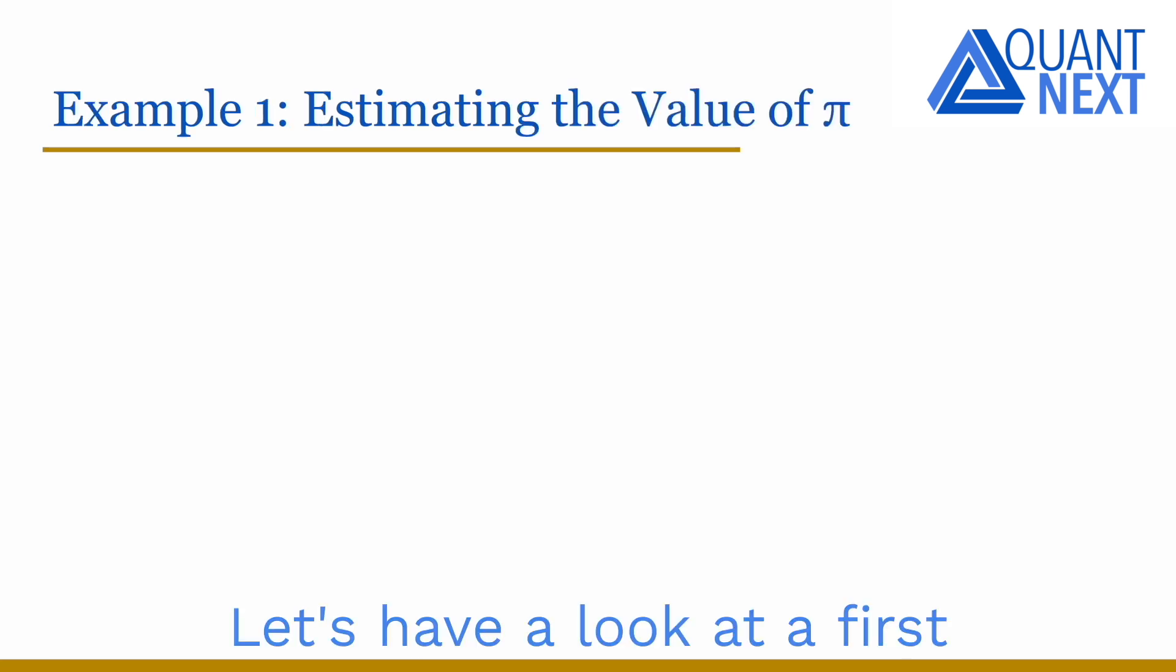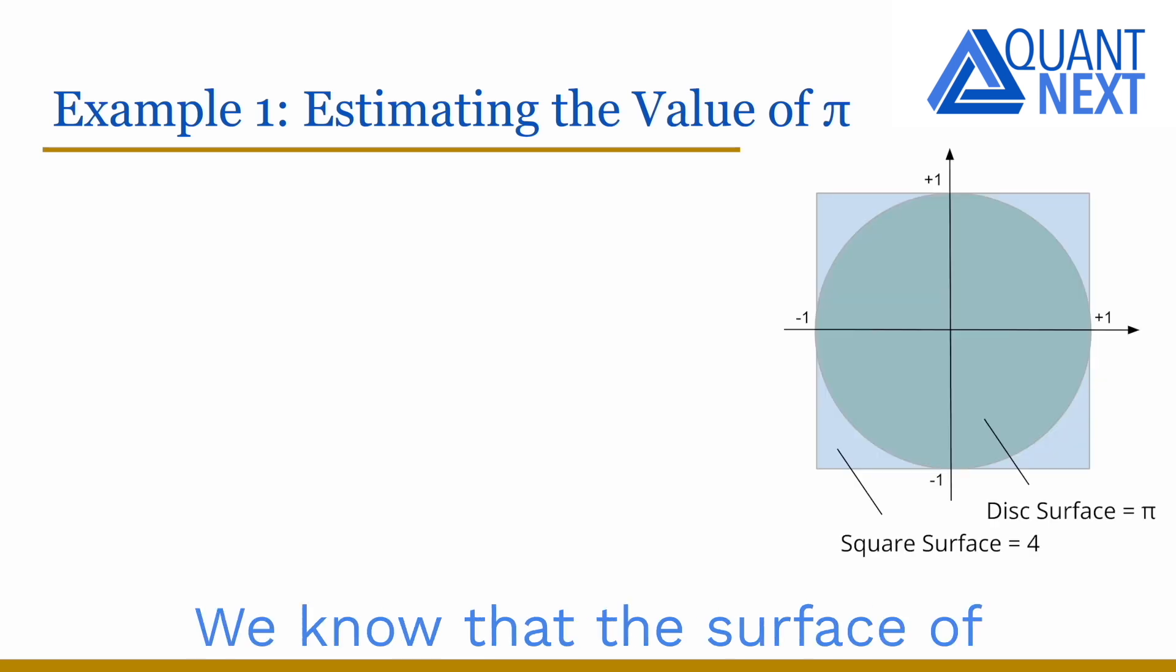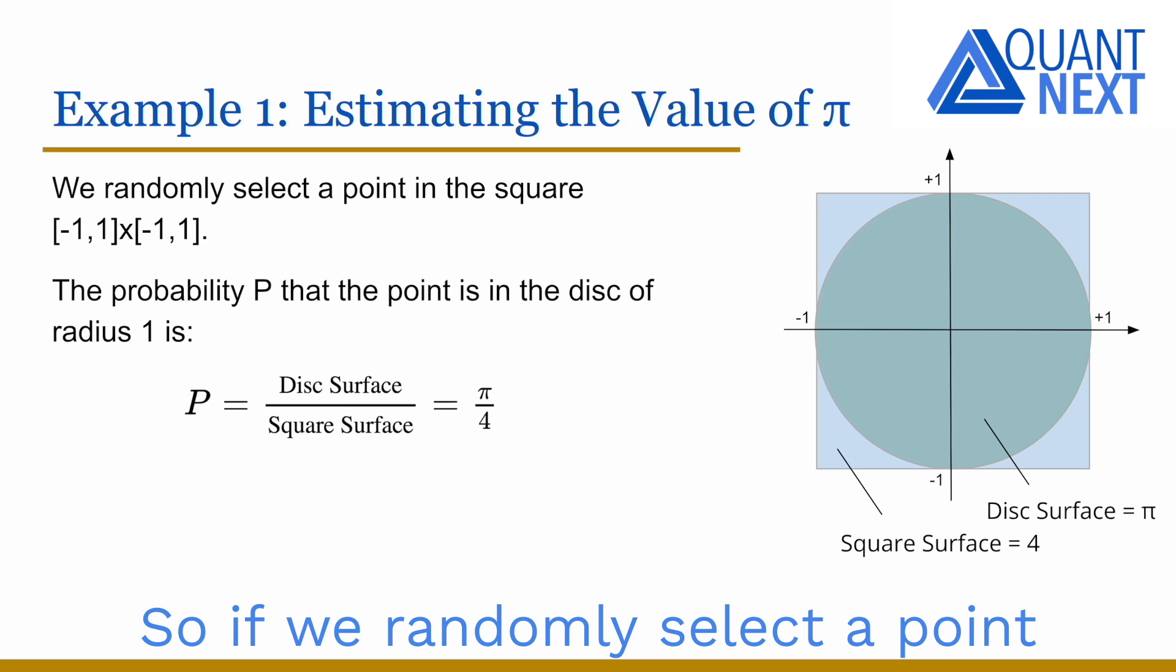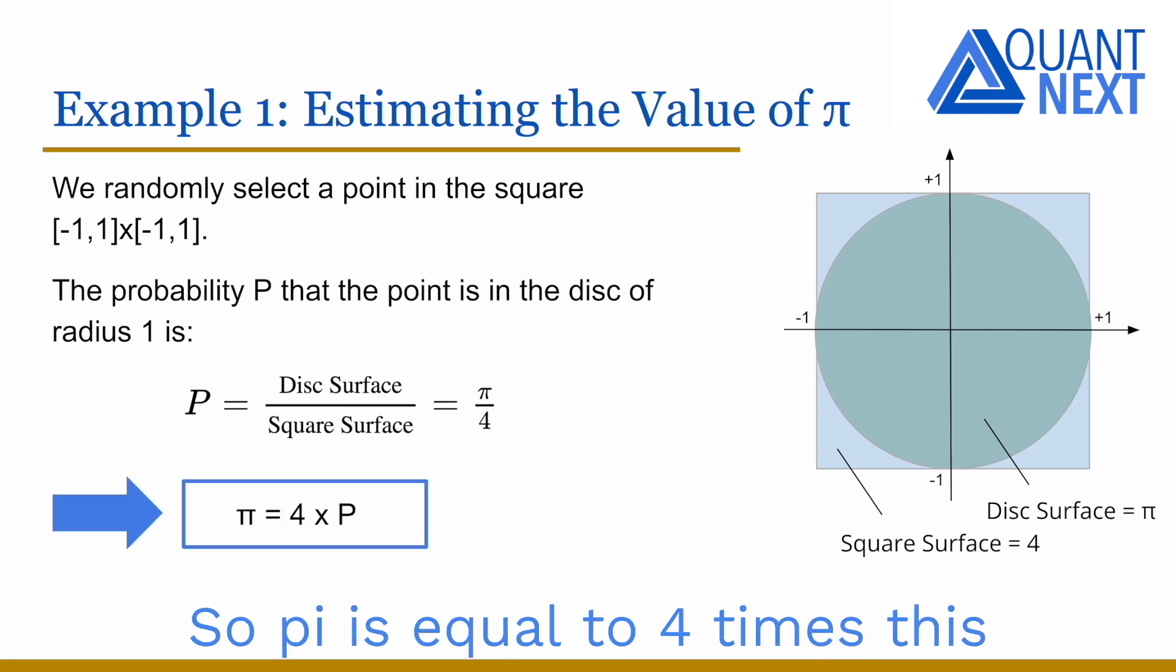Let's have a look at the first simple example with the estimation of the value of pi. We know that the surface of a disk which has a radius of one is equal to pi. This disk can be placed into a square which side length is of two units so its surface is four. So if we randomly select a point in the square the probability that the point is in the disk is equal to pi divided by four. So pi is equal to four times this probability.